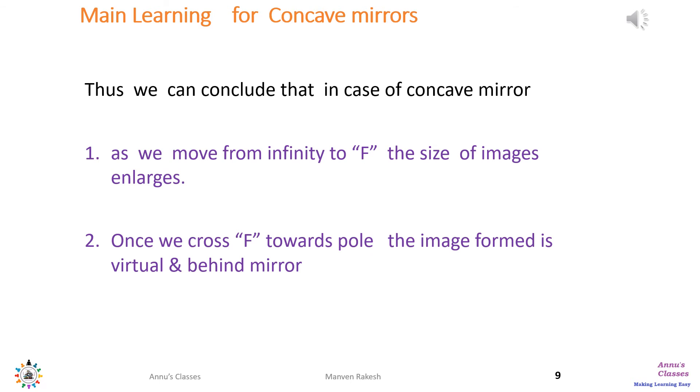The main learning for concave mirrors: as we move from infinity to F, the size of image enlarges but it remains real and inverted. Beyond F, as we move towards the pole, the image goes behind the mirror and becomes virtual, erect and enlarged.